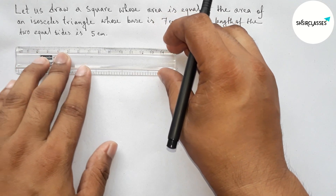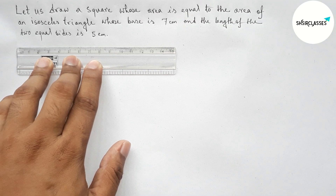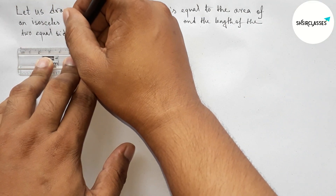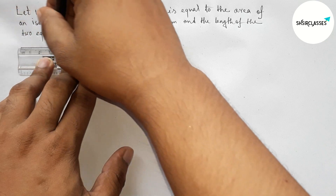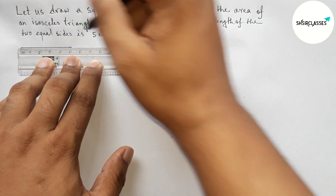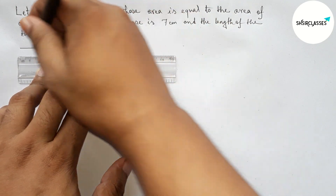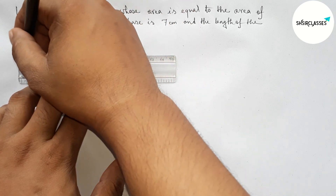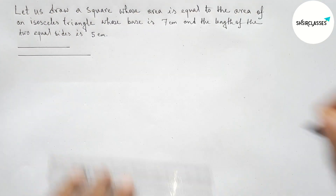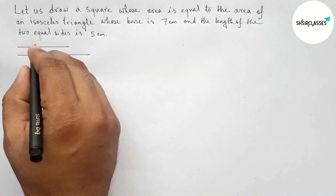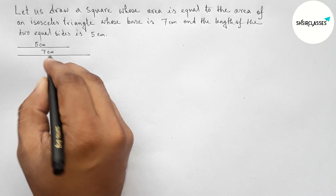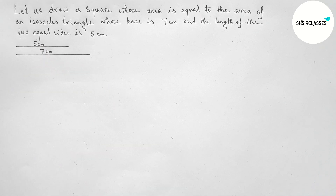First of all, let us draw the given two sides. Drawing a line segment of length 5 centimeters — this is the 5 centimeter line segment. Then drawing another line segment of length 7 centimeters. Now labeling: this one is 5 centimeters and this one is 7 centimeters.